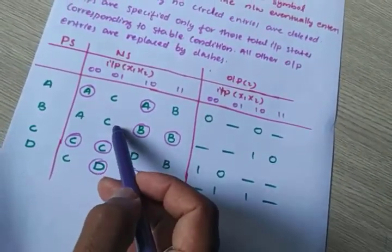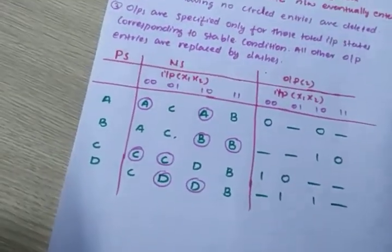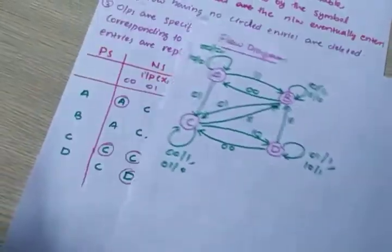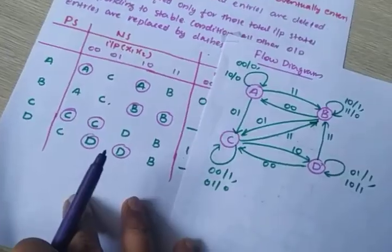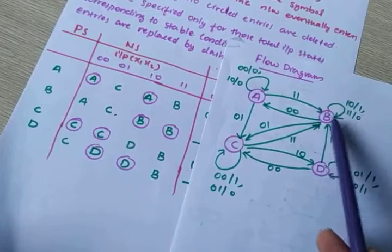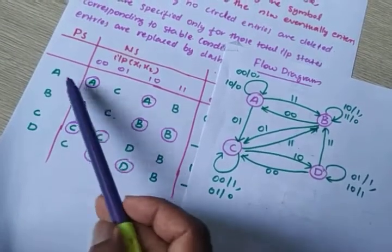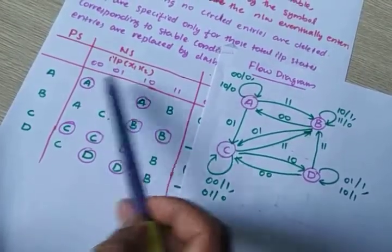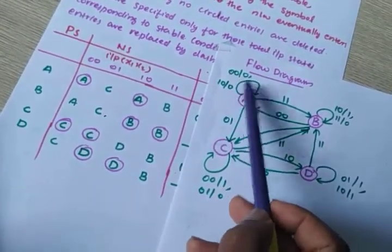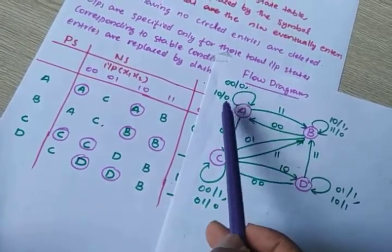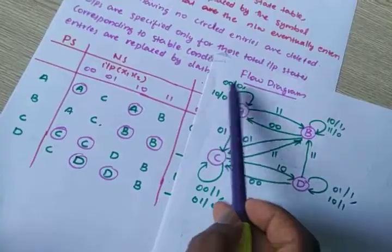I replaced this A by C. Now we need to draw the flow diagram, which is similar to the state diagram. From this table, with four states A, B, C, D: consider A — for input 0,0, next state is A only, a self loop. For 0,1 also, next state is A. So for 0,0 and 0,1, next state is A only — that is a self loop.